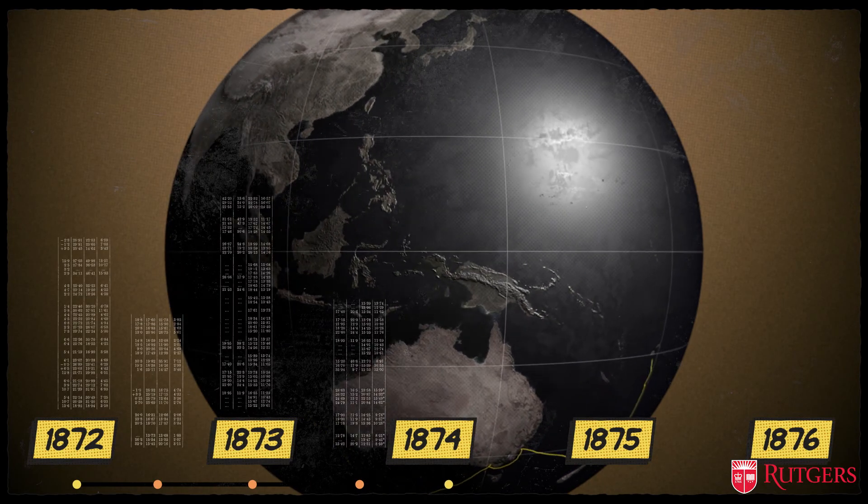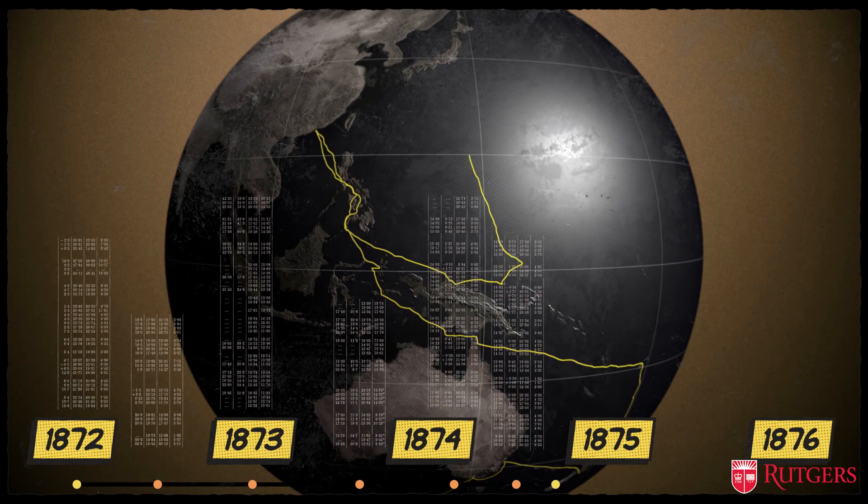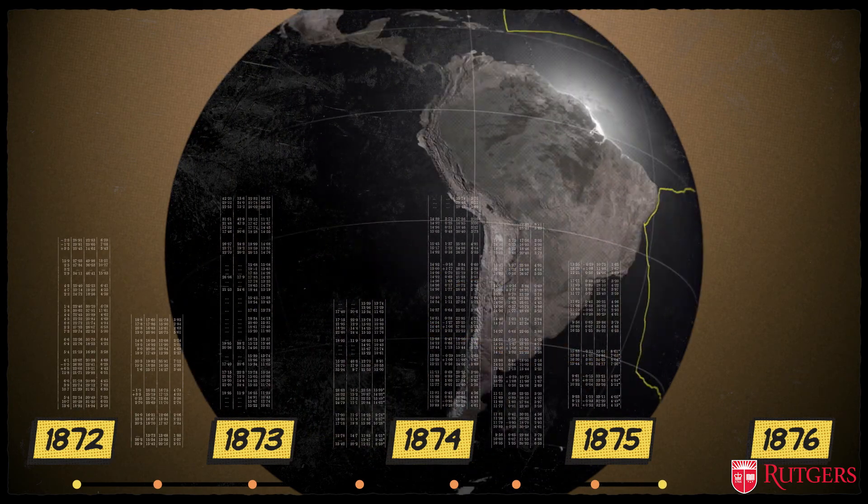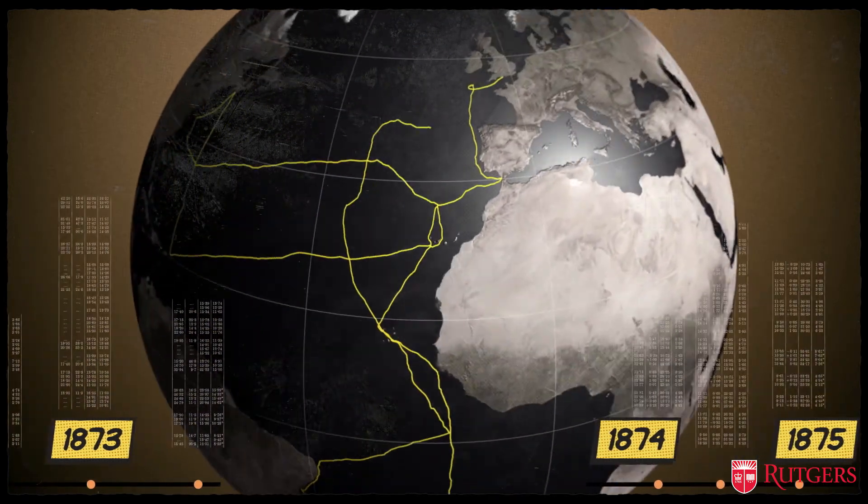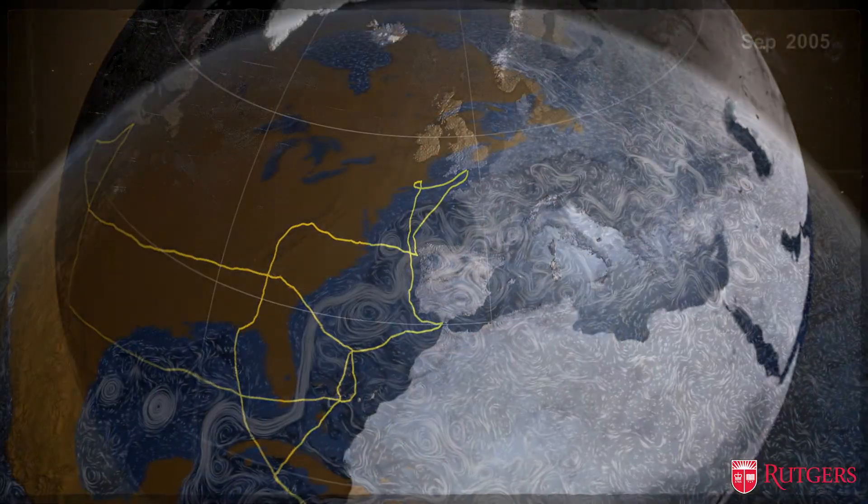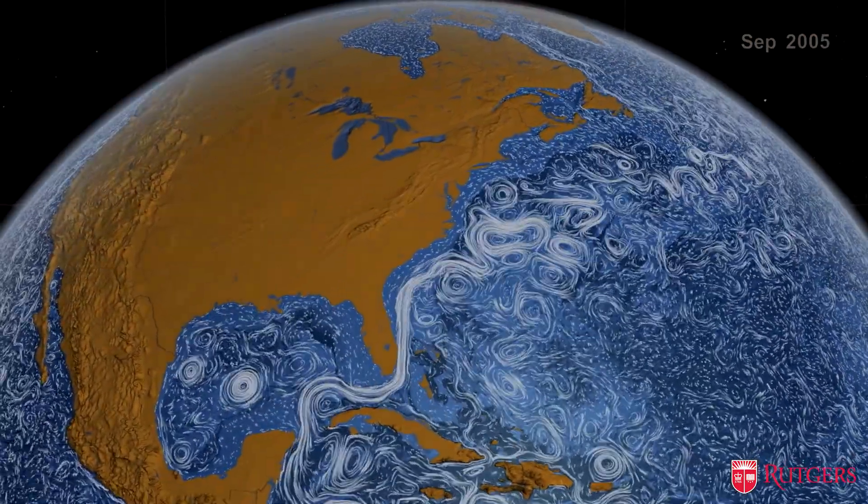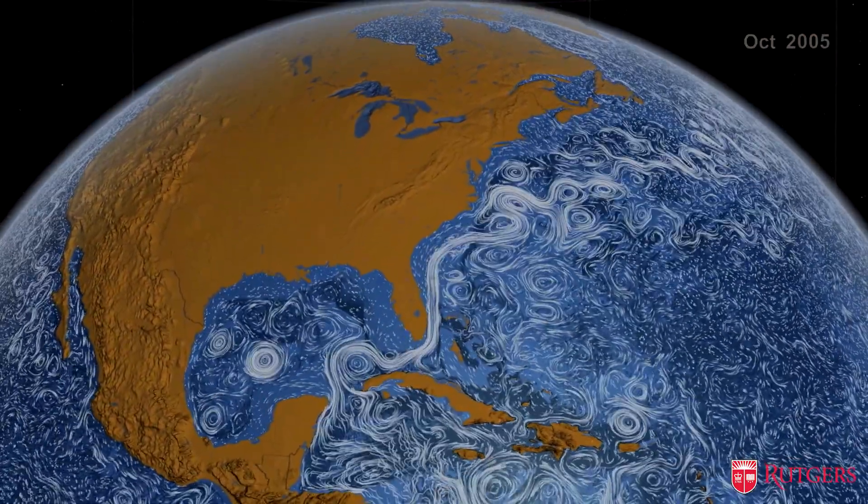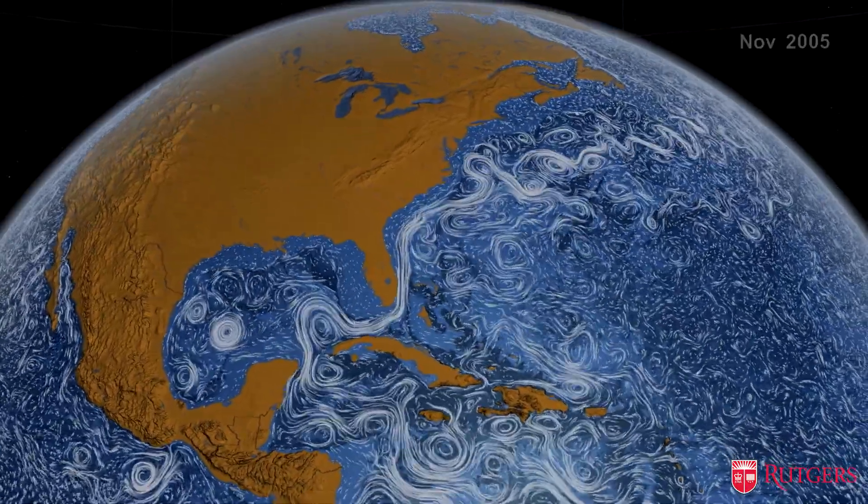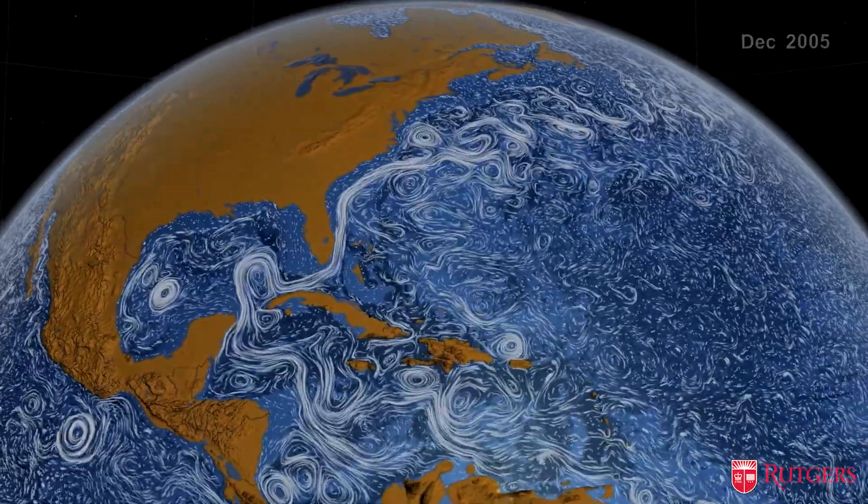In the 1870s, almost nothing was known about the ocean, so any data was useful. Even these discrete snapshots taken at specific moments in time. The problem is, the ocean is always moving, so to really understand how it works, especially how it changes over time, you need better data.